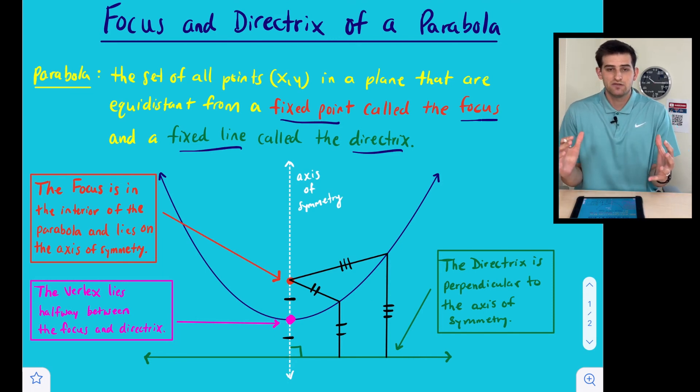Okay, so main takeaways from this video: the focus is a point, it's on the interior of our parabola, it lies on the axis of symmetry, and the directrix is a line, it's a horizontal line. In this case, if our parabola was opening to the side, it would be a vertical line. So basically, remember that the directrix is perpendicular to your axis of symmetry. Okay, and that's what the focus and the directrix are.